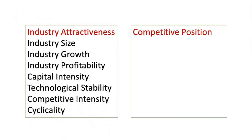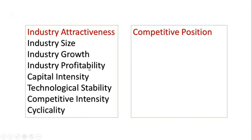Now let's look at which components fall under industry attractiveness: industry size, industry growth, industry profitability, capital intensity, technological stability, competitive intensity, and cyclicality. If your attractiveness is low or medium, you should identify from these components where the problem lies — for example, maybe your technological stability is not good. Even medium attractiveness can decline to low, so always identify the root cause.